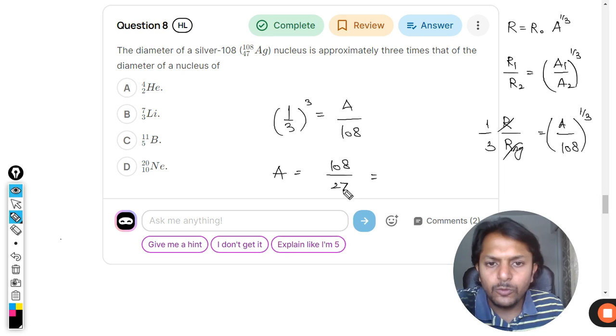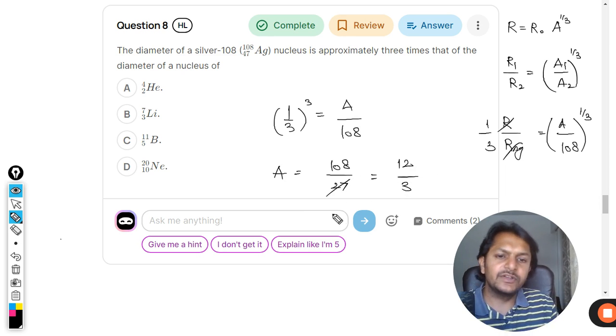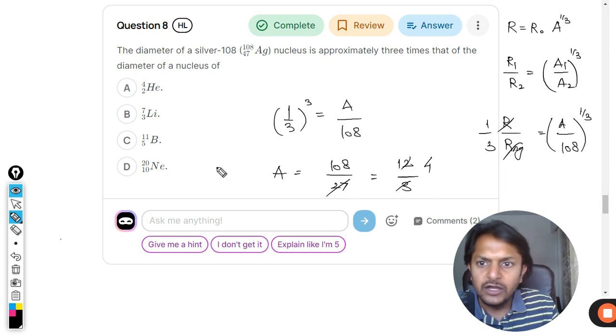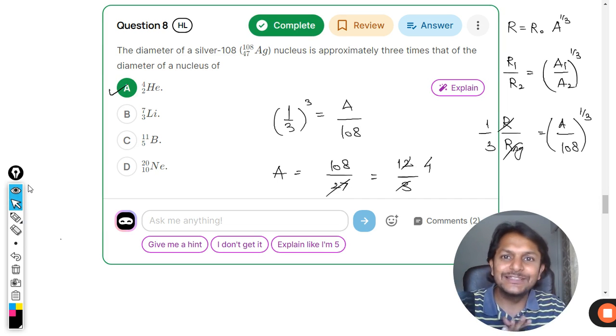So what will be this value? 9, 3s are 9, 12. Yes, 3, 4s are. So A is equal to 4. It means that the mass number should be equal to 4 according to this formulation. And hence, the answer will be helium. And that is why this is absolutely correct. This is how we do it.